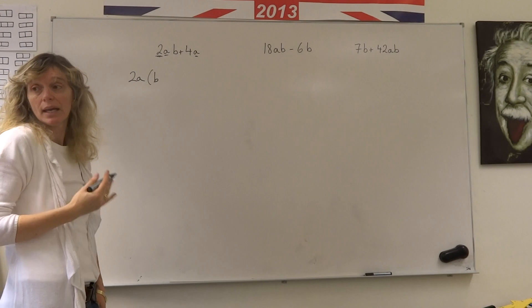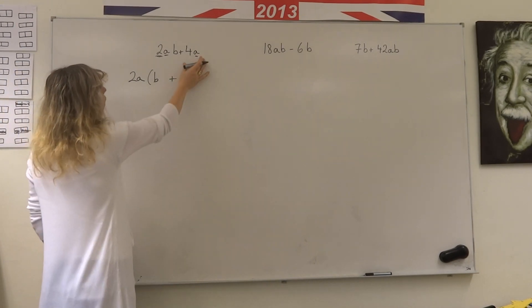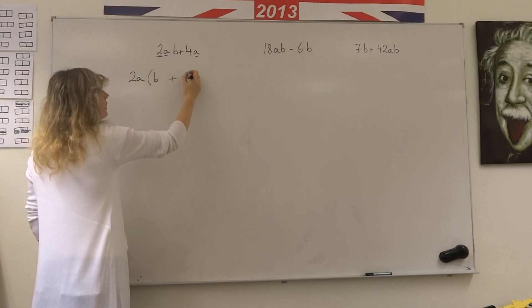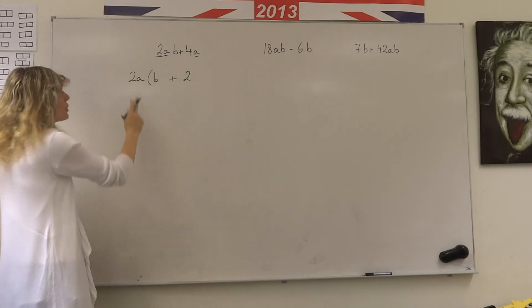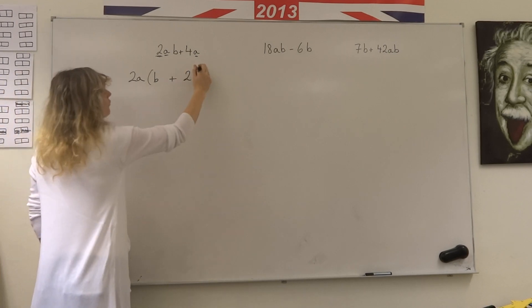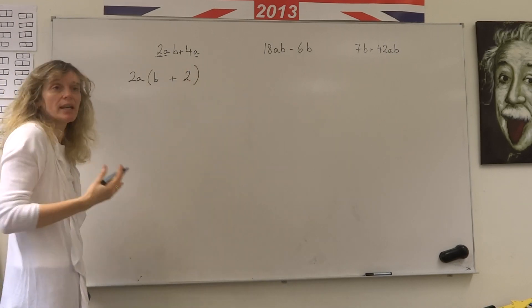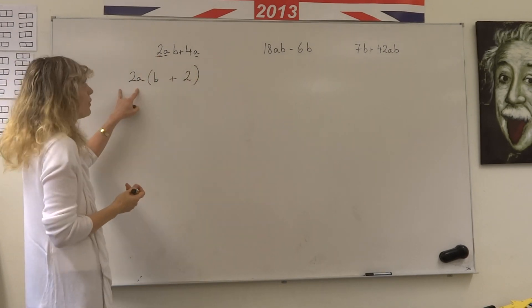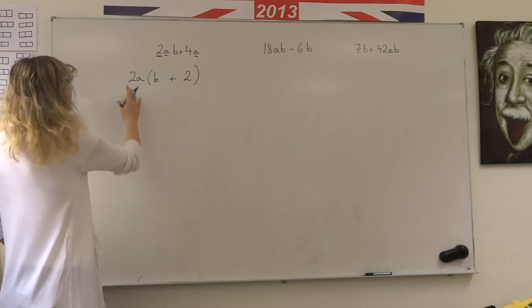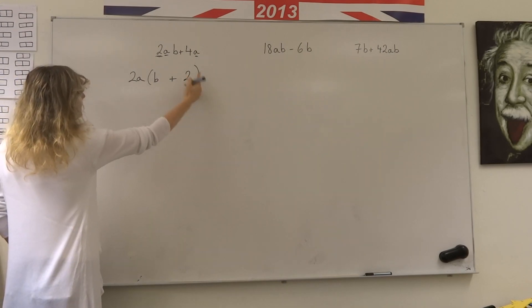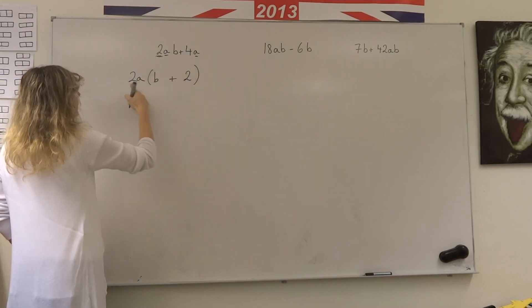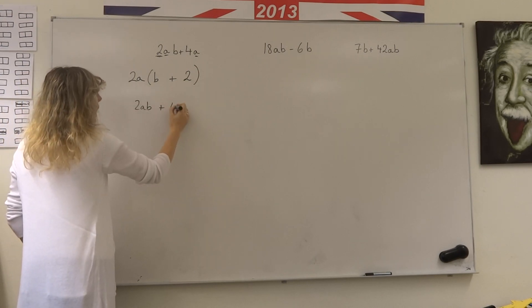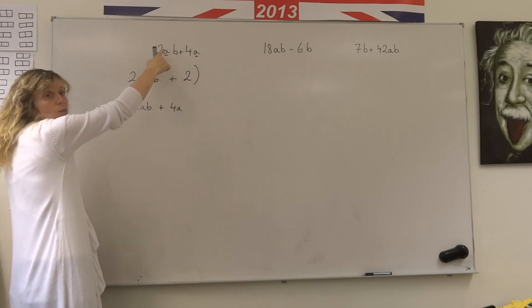Then I have to think, what would I multiply 2A by to get 4A? I'd multiply it by 2 because 2 times 2 is 4. So just sort of thinking about what's the highest common factor, take it out the front and then do a little check. If I expand this out, do I get back to what I started with? 2A times B is 2AB. 2A times 2 is 4A. Yes, I get back to where I started.